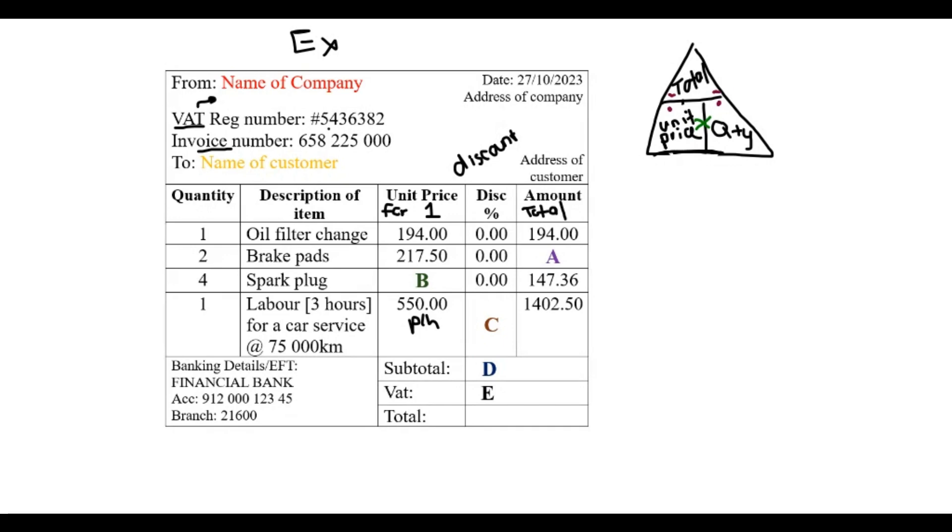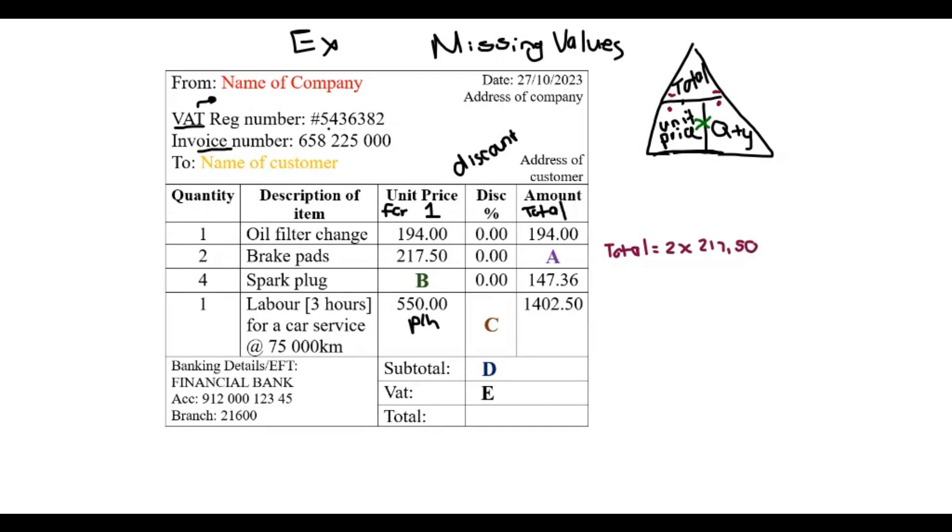Let's find the missing values. We start off by seeing we have A, so two brake pads and the unit price for one is two hundred and seventeen point fifty. Since I am looking for the total amount, I can multiply the quantity and the unit price, and that gives me four hundred thirty five. I'm going to write it in here by A as well - four hundred thirty five rand.